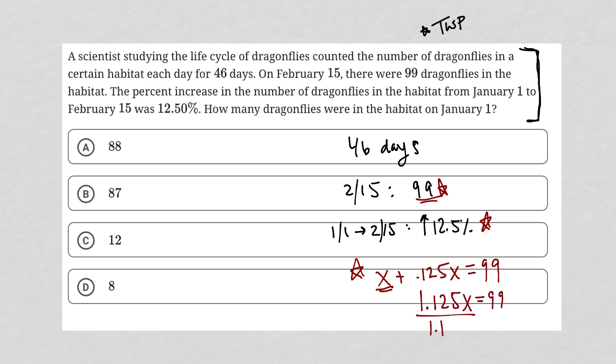From there, we're just dividing both sides of our equation by 1.125. So we have X is equal to, go to my calculator. What is 99 divided by 1.125? That answer is 88. So the correct answer here is choice A.